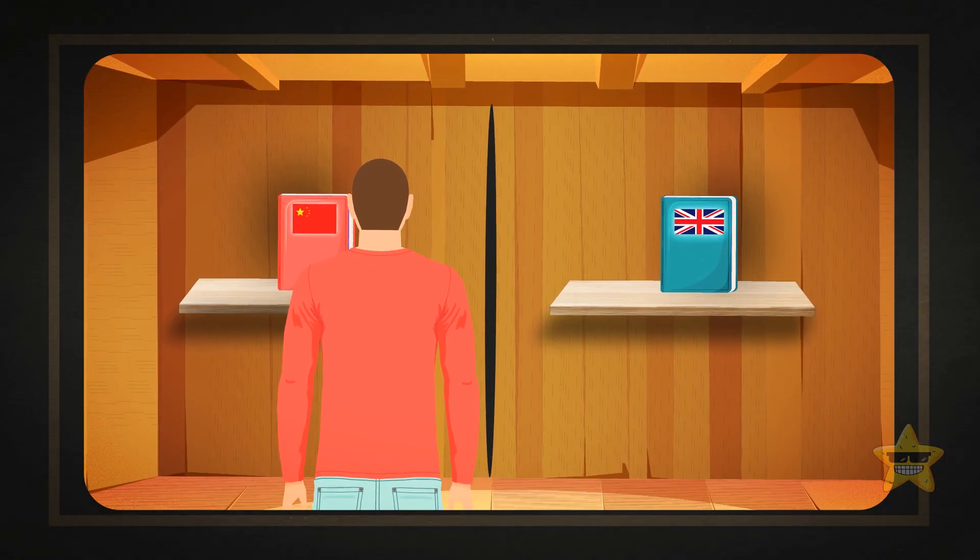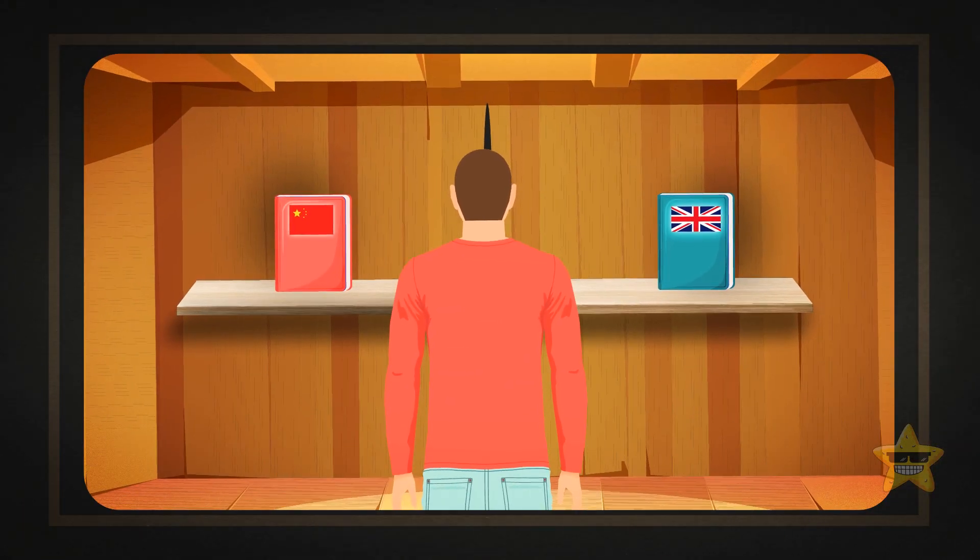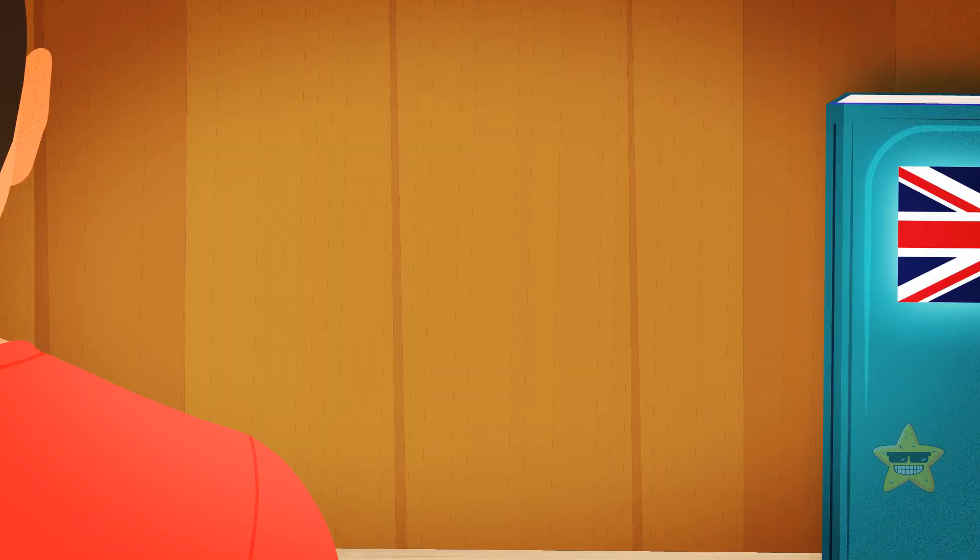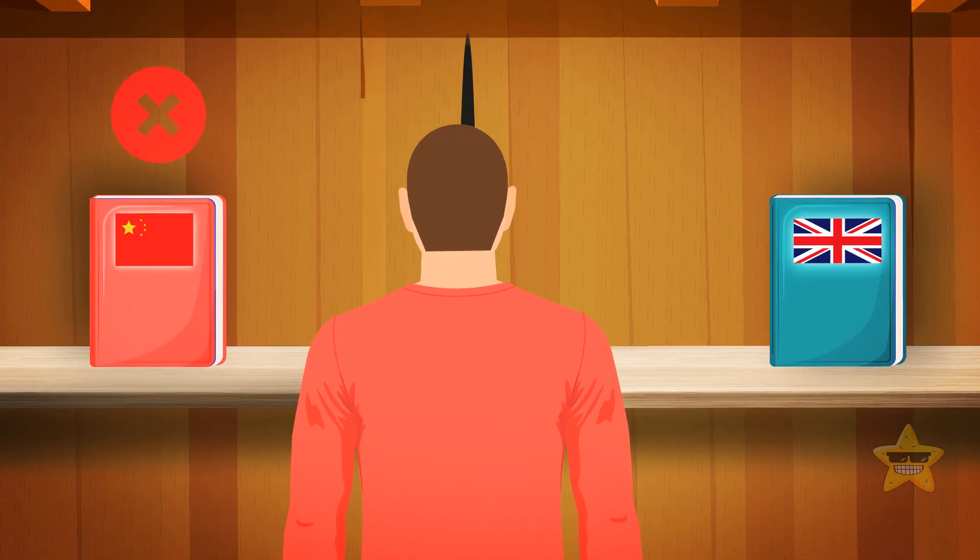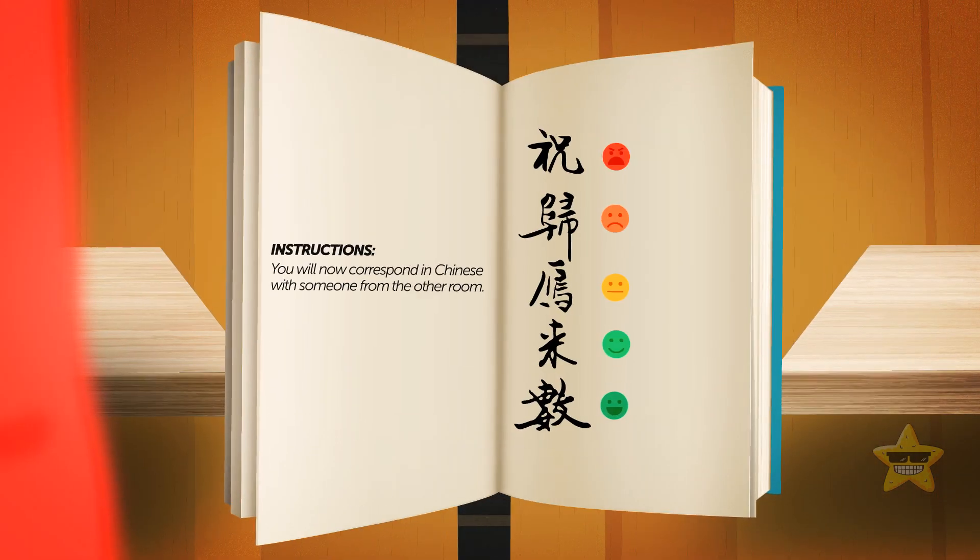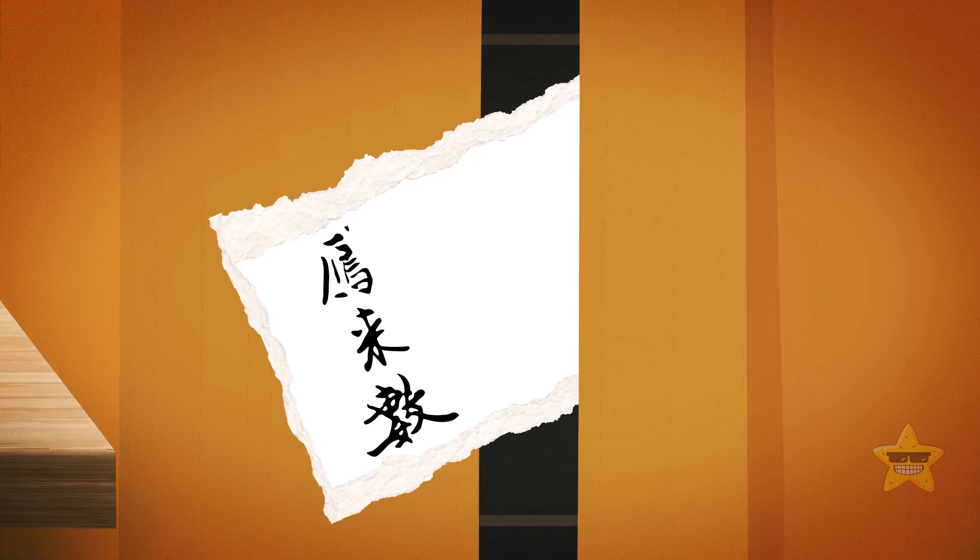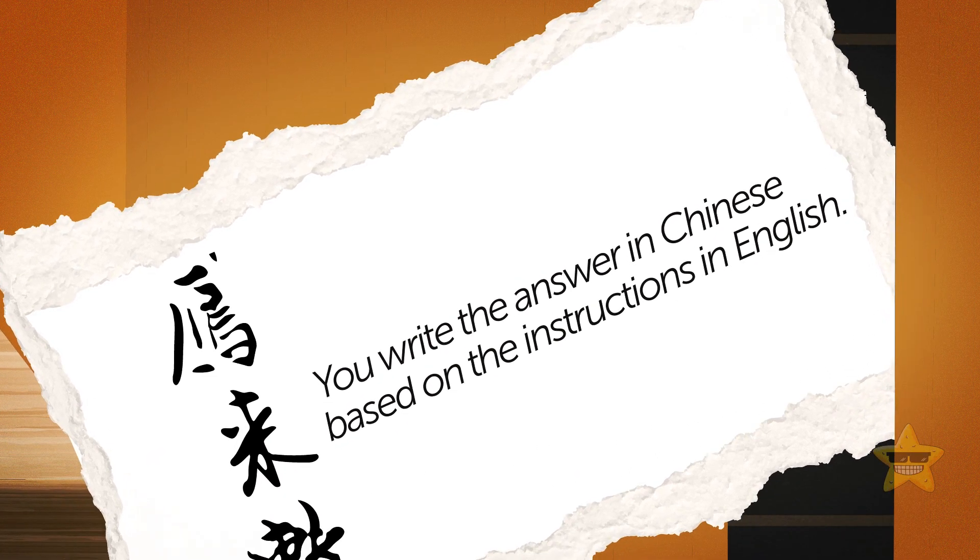You're in a room without windows or doors. There's only one tiny gap leading into another room. Inside the room, there are two shelves with books. One shelf has books in Chinese, while the second shelf has documents with instructions in English. You don't know Chinese, but you speak English fluently. The instructions state that you will now correspond in Chinese with someone from the other room. The rules are simple. They slip a piece of paper with Chinese words through the gap, and you write the answer in Chinese based on the instructions in English.